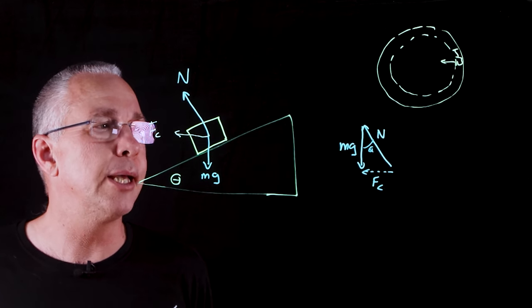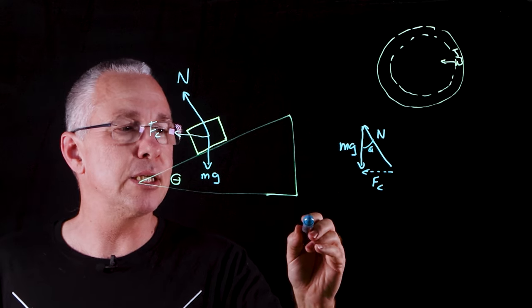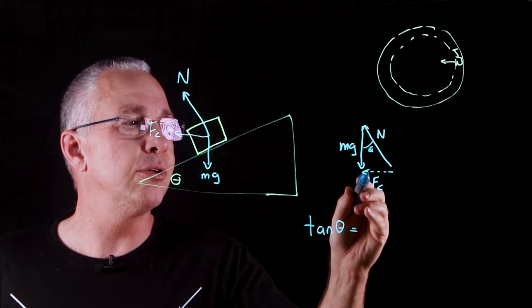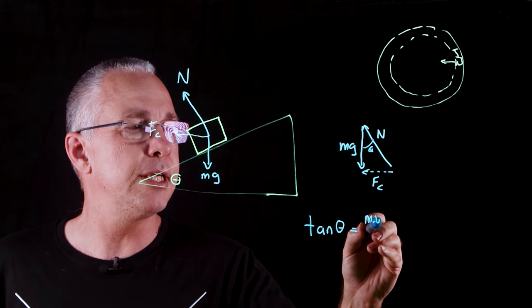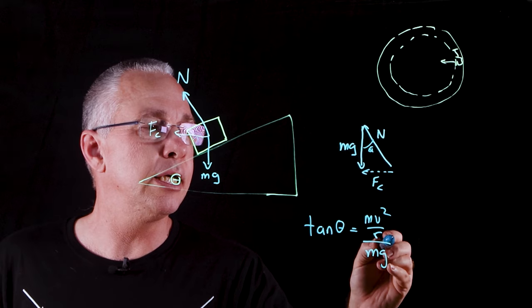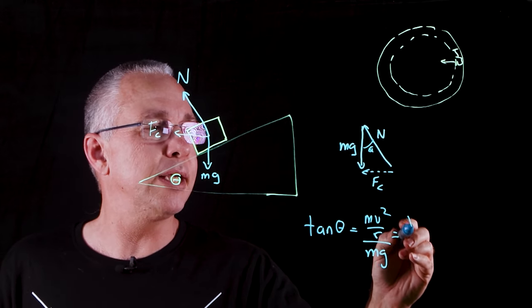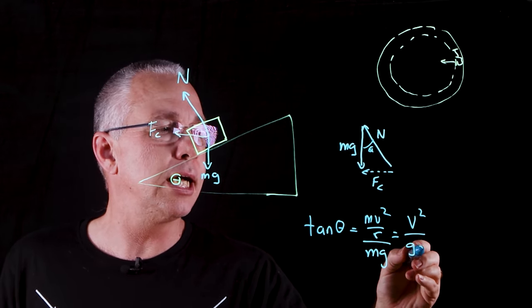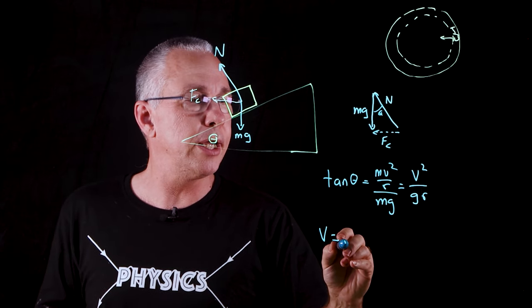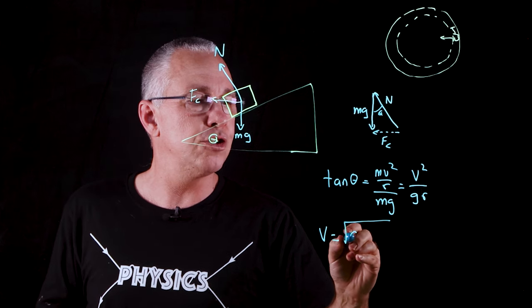And so now what we can see is that we have tan θ is equal to the centripetal force, which is mv² over r, divided by mg. And then when we simplify that we get v² over gr. In other words, v ends up being the square root of gr tan θ.